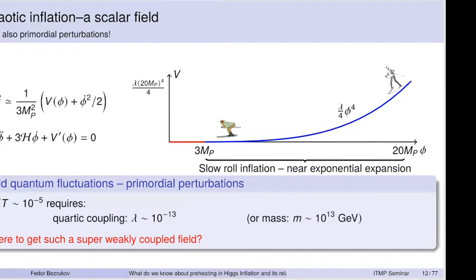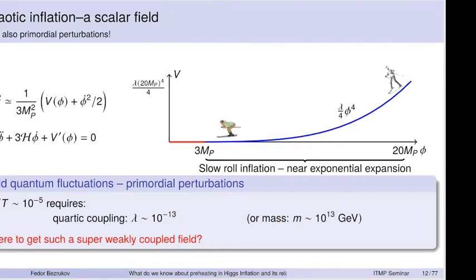The evolution of the scalar field is described by two equations. I'm speaking about uniform background evolution — a space-independent field depending only on time. The field rolls down the potential, governed by a simple equation of motion: there's an acceleration force from the derivative of the potential, and a friction-like term due to the expansion of the universe — it's slightly harder for the field to move when the universe expands. The Hubble rate H is given by the energy density, specifically the potential energy density.